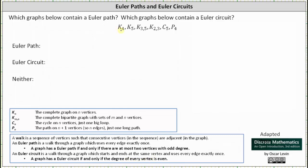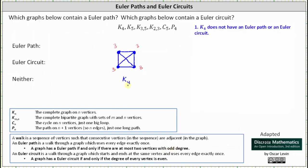We are first given the graph of K₄, the complete graph on four vertices, where every pair of vertices is adjacent. Let's go ahead and sketch the graph. Notice each vertex has degree three. In general, every vertex of Kₙ has degree n minus one. In this case, we have four vertices with an odd degree. This does not satisfy the condition for an Euler path where at most two vertices have an odd degree, which indicates K₄ does not have an Euler path and also doesn't have an Euler circuit. We list K₄ under neither.